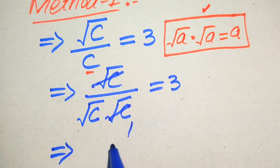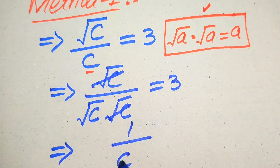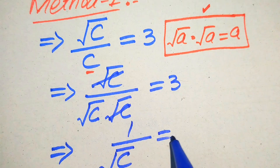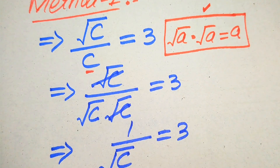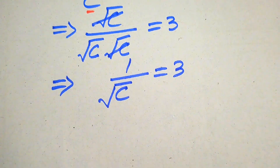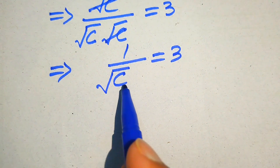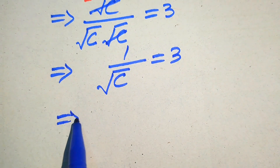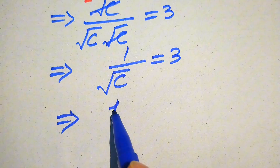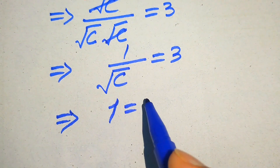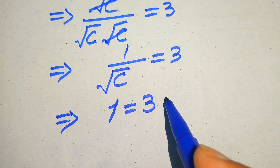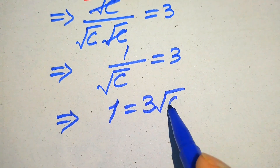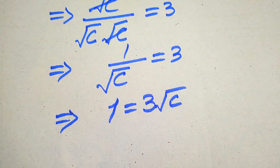You see here this square root of c and this square root of c cancel, and we get 1 over square root of c equals 3. Then we move the square root of c to the right-hand side, giving us 1 equals 3 times square root of c.